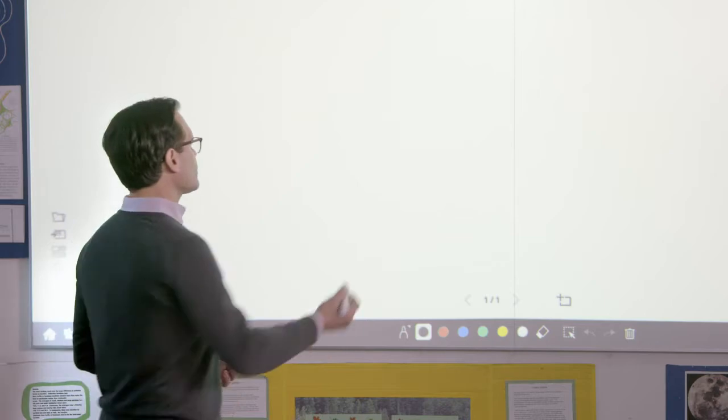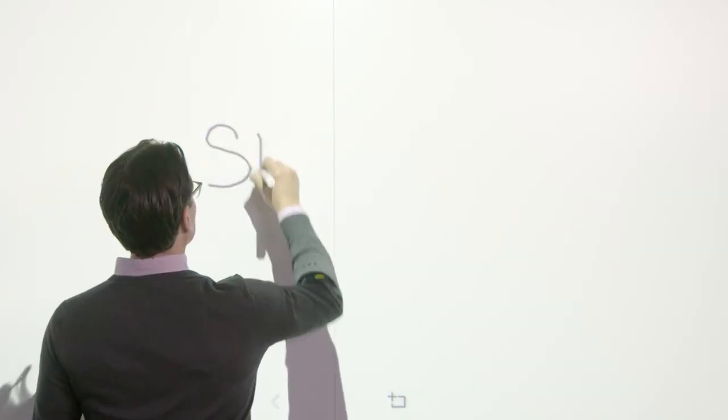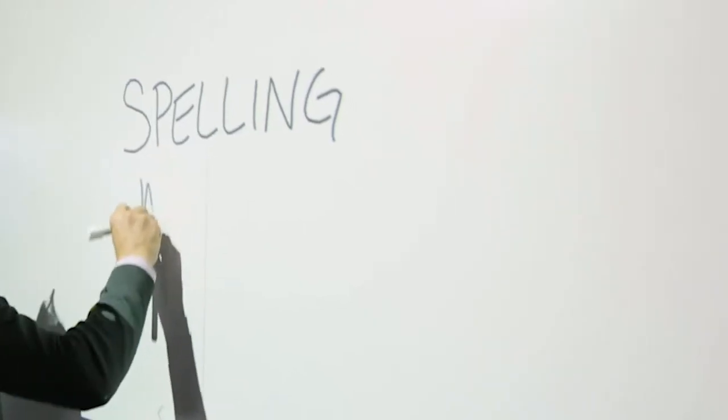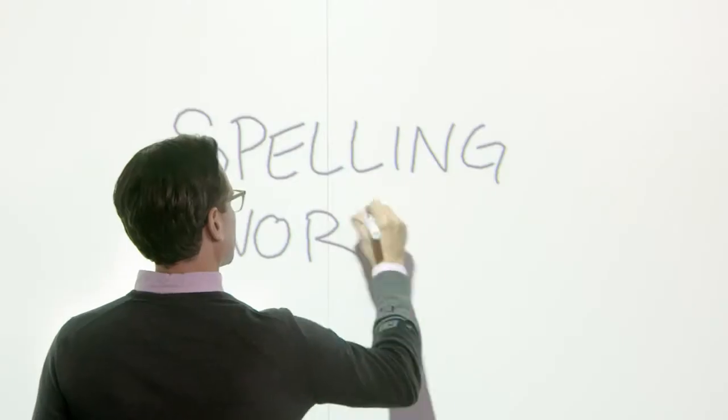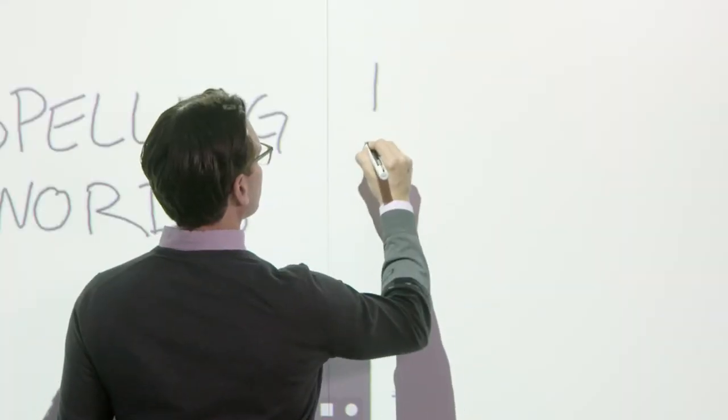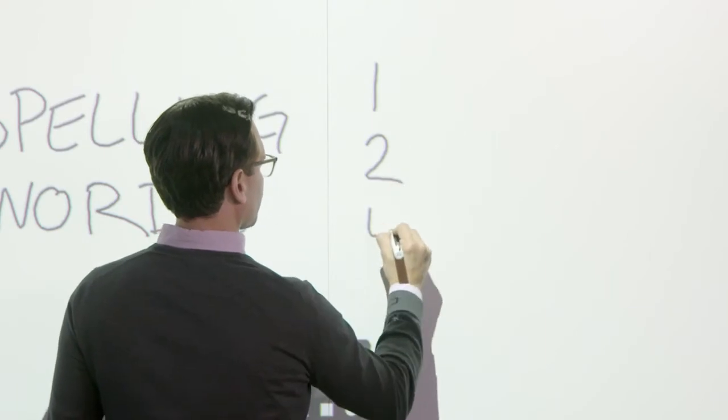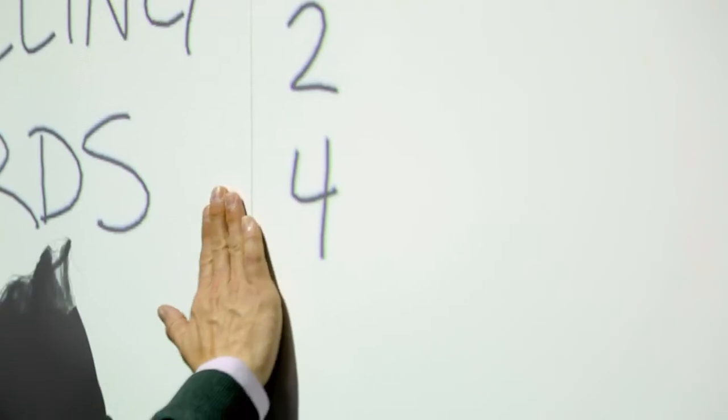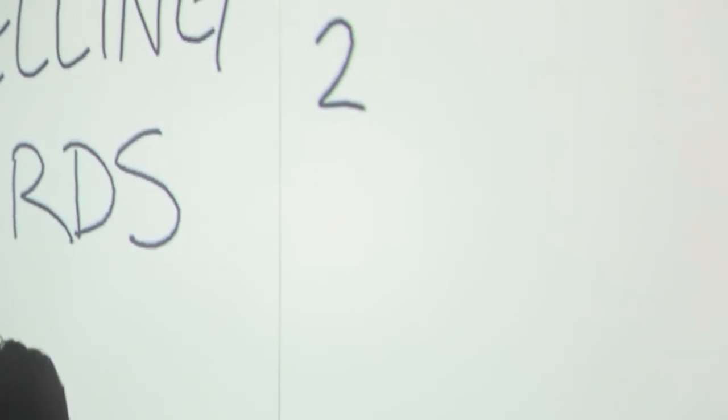Let's start writing something like spelling words. Using the available interactive pens or my finger, as you can see, my notes are being projected. Or let me add some numbers here. What if I make a typo? No problem. Because I can easily erase it with my hand.